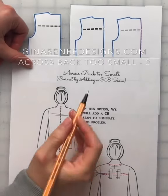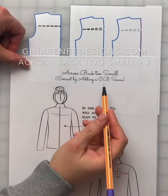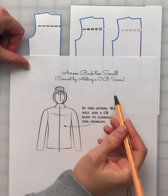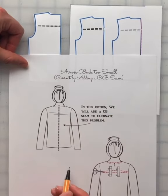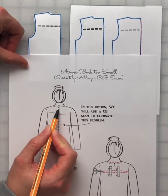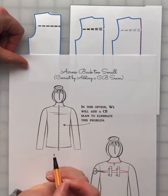This correction is a cross back too small and you're adding a center back seam. You're going to use this option when the neckline is sitting too low and you're not happy with the position of the neckline.